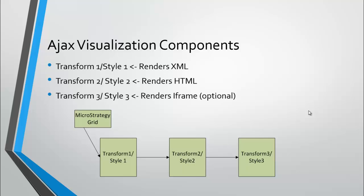The MicroStrategy AJAX visualization components are fairly simple — there are really three stages. The first is Transform1 and Style1, which handle the rendering of the XML. Transform2 and Style2 render all your HTML, your custom JavaScript, anything necessary to actually render your visualization. Transform3 and Style3 are optional — basically what it does is render everything from Transform2 inside an iframe, ensuring your custom JavaScript or CSS won't interfere with the out-of-the-box MicroStrategy codebase.